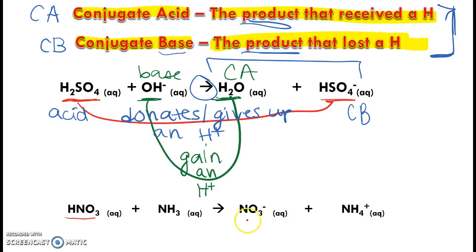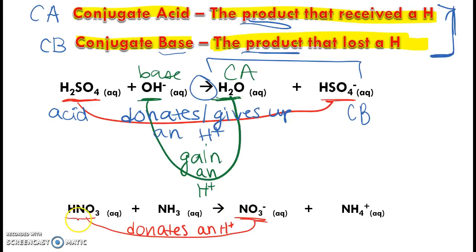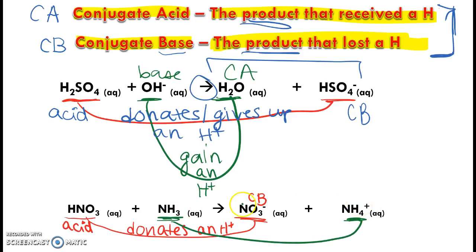In the next example, we connect things that look similar. We go from HNO3 to NO3-. HNO3 donates or loses an H+, so it is our acid, and NO3- is the conjugate base — the product that lost the H. We also connect NH3 with NH4+. NH3 gains or accepts a hydrogen, so by definition it is our base. And NH4+ — the product that received the H — is our conjugate acid.